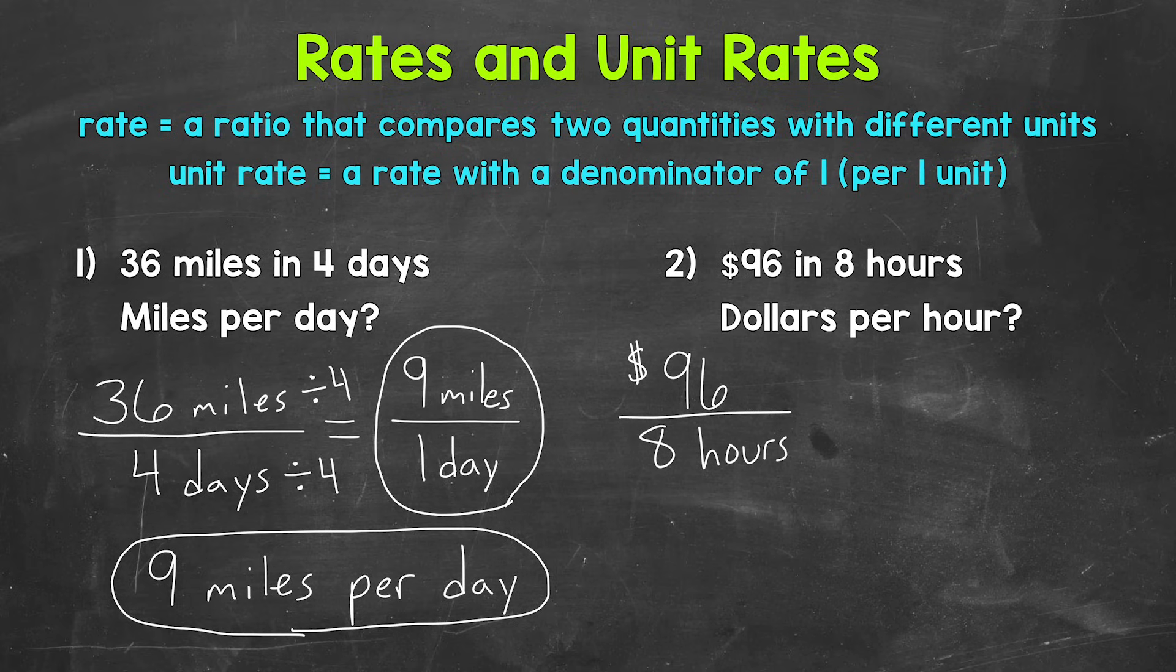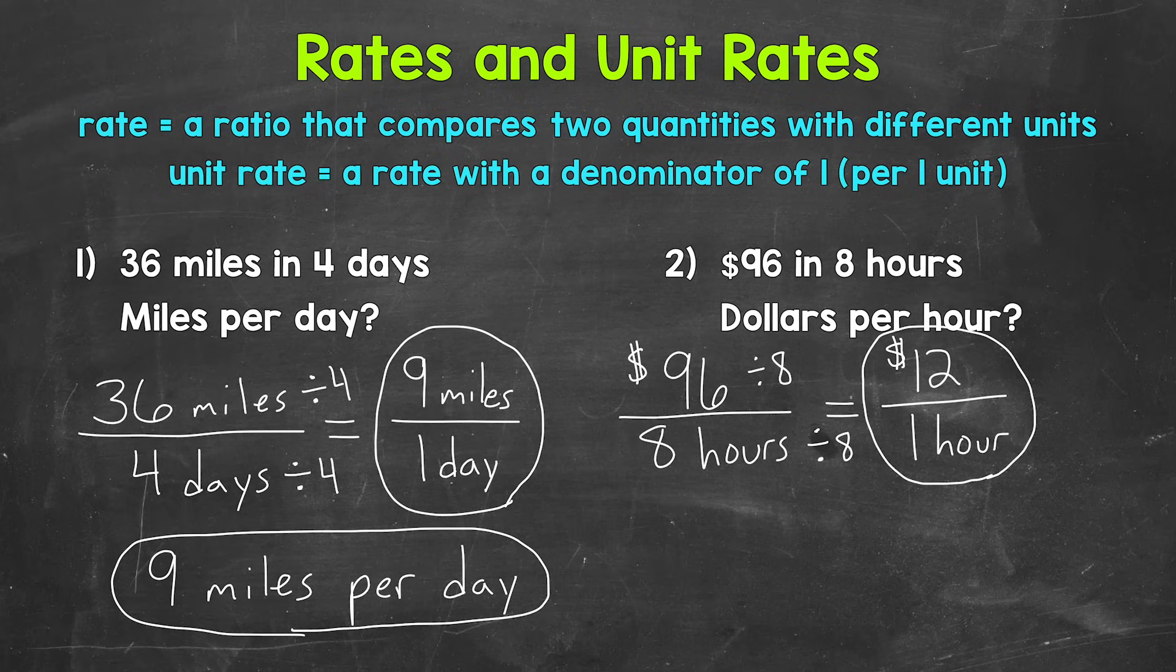Let's find our unit rate. So how much money per 1 hour? We can do this by dividing by 8. Because again, we need that denominator to equal 1. So let's divide by 8 here to give us 1 hour. Whatever we do to the bottom, we must do to the top. So 96 divided by 8 as well. That gives us 12 dollars. So our unit rate is 12 dollars per 1 hour, or 12 dollars per hour. And we can also write that as 12 dollars per hour.